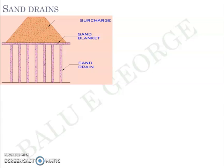Let's assume that the building will induce a settlement of 50 millimeters on the site. Just before the building construction, you can actually accelerate the process of settlement by inducing a settlement of, say, 45 millimeters. This means while the building starts to be constructed, there's already a settlement of 45 millimeters, and the maximum additional settlement expected due to construction is just 5 millimeters. That in a nutshell is the process of pre-consolidation.